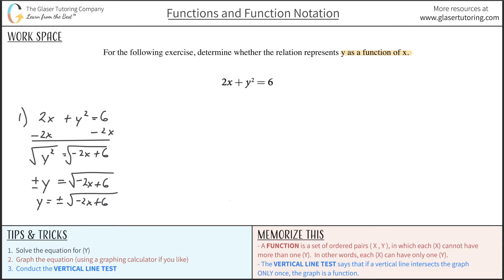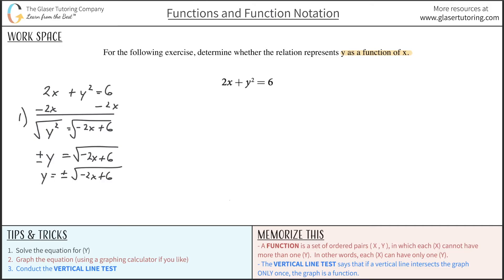And this is now the case where I can break this up into two separate equations so we can graph it in our calculator. One of the equations is going to be the positive value on the right and the other equation will be the negative value. So here we're going to have y equals radical negative 2x plus 6, and also y equals negative radical negative 2x plus 6. So these are the two things you're going to be looking to graph in your calculator.